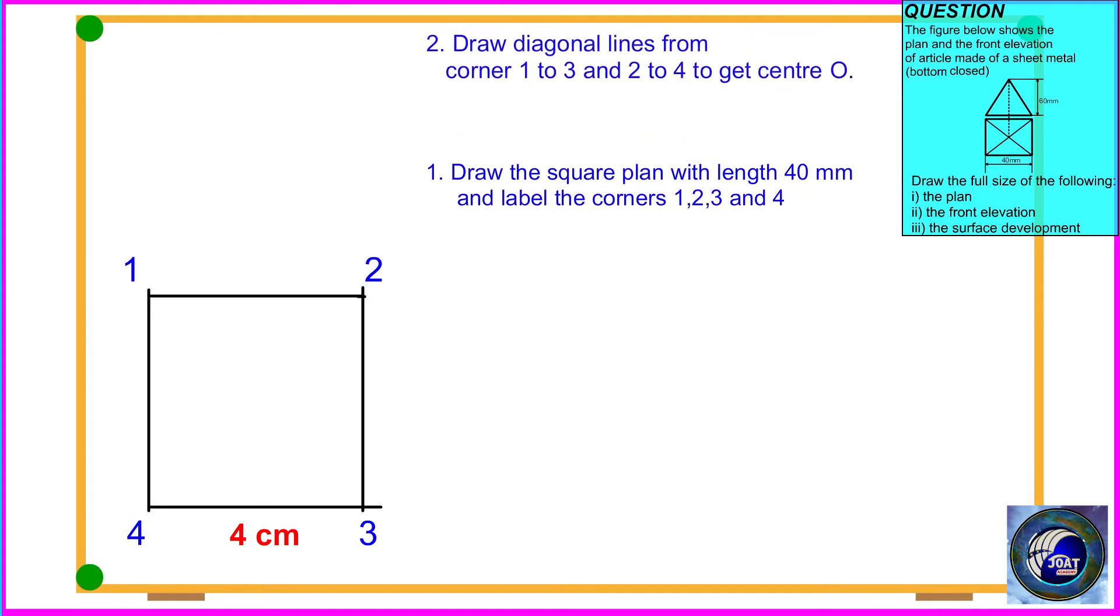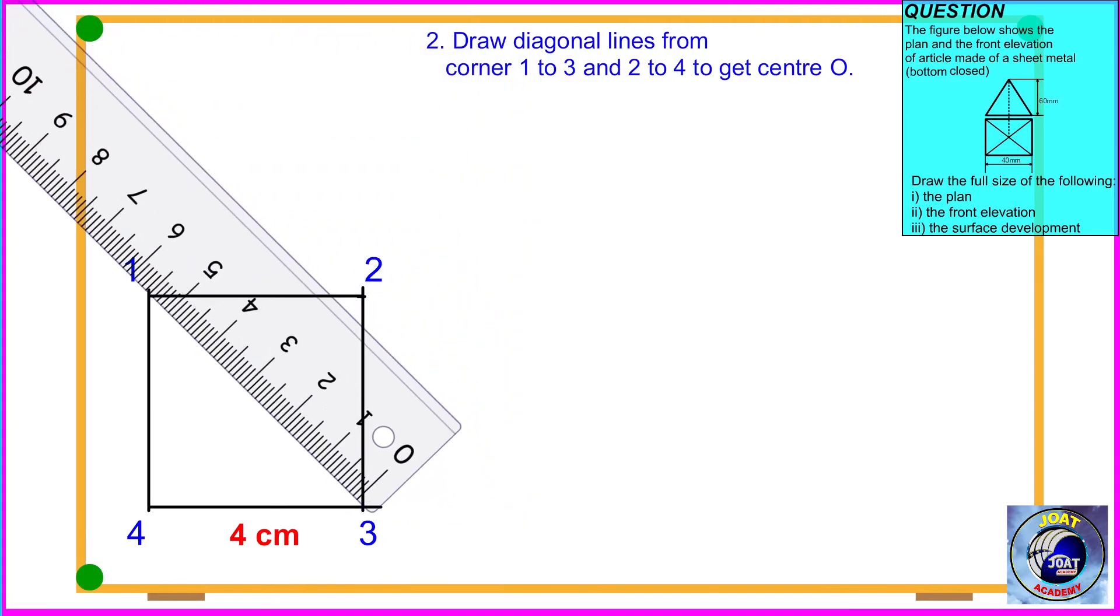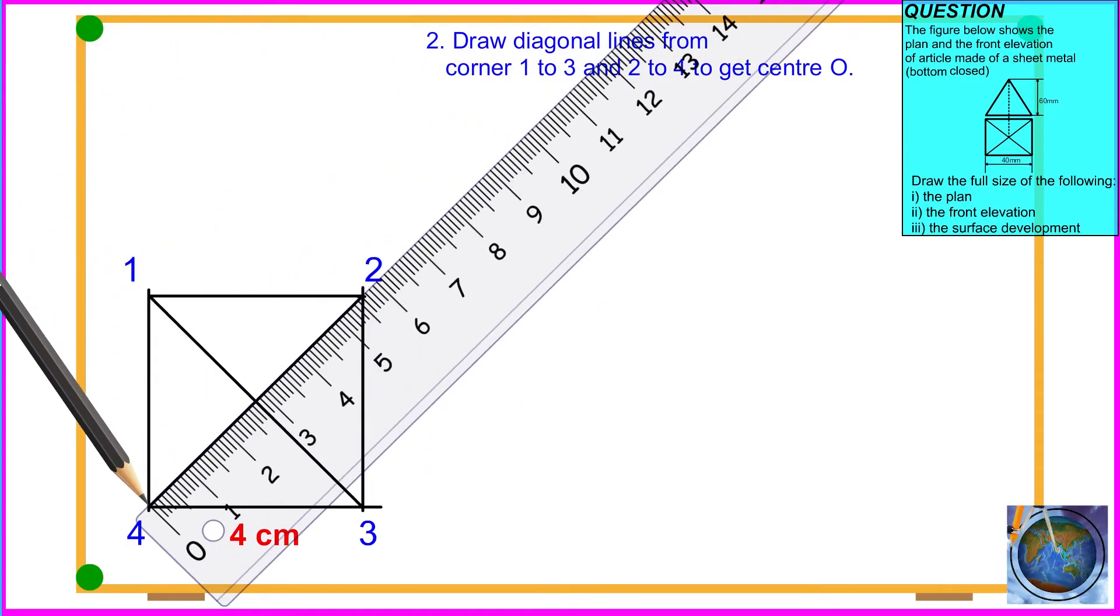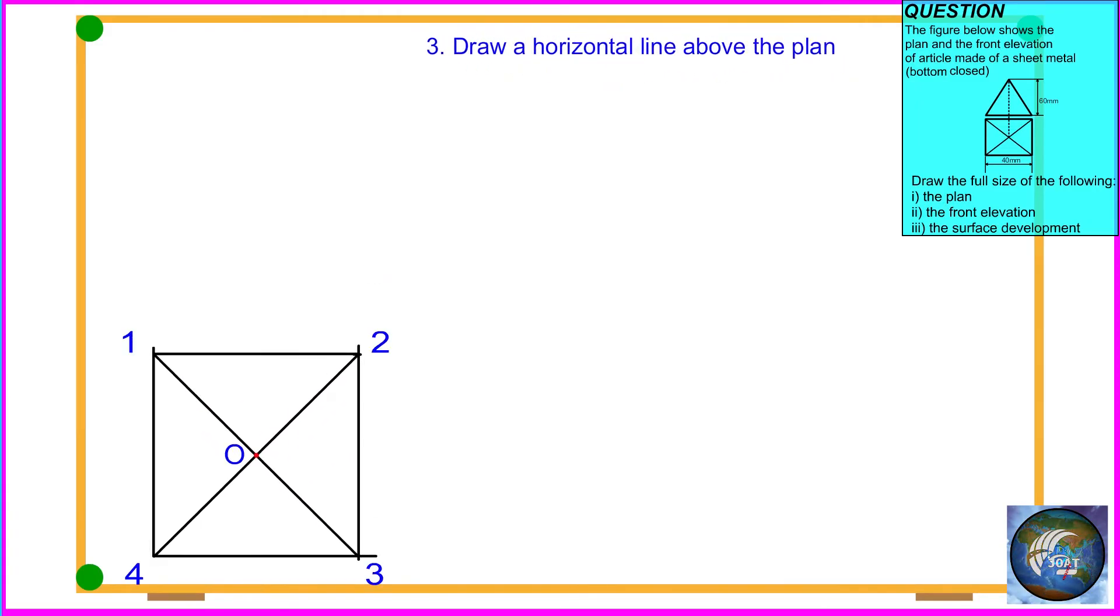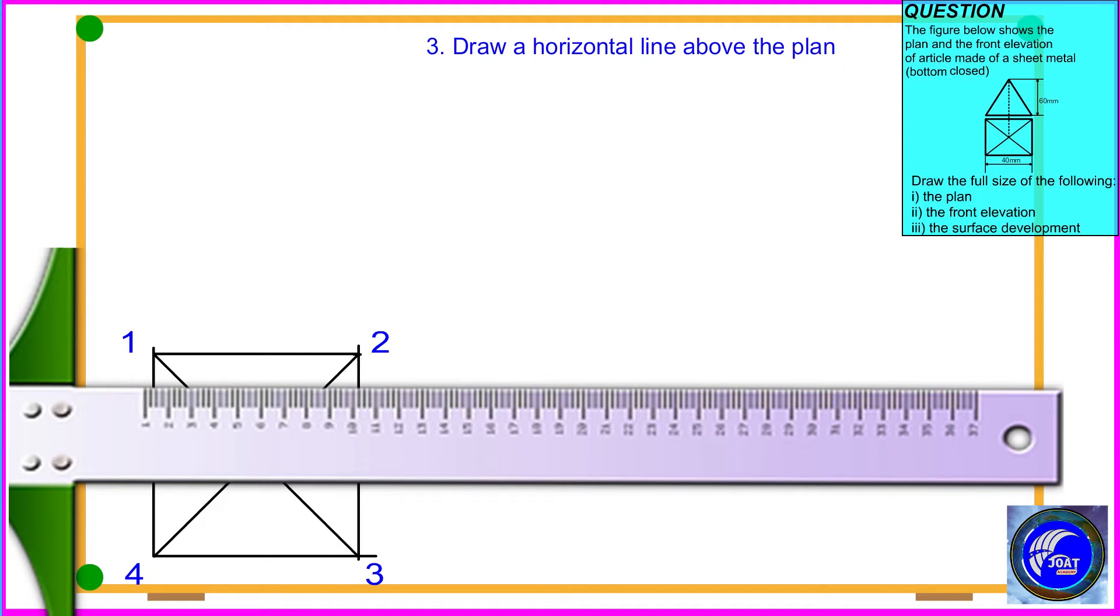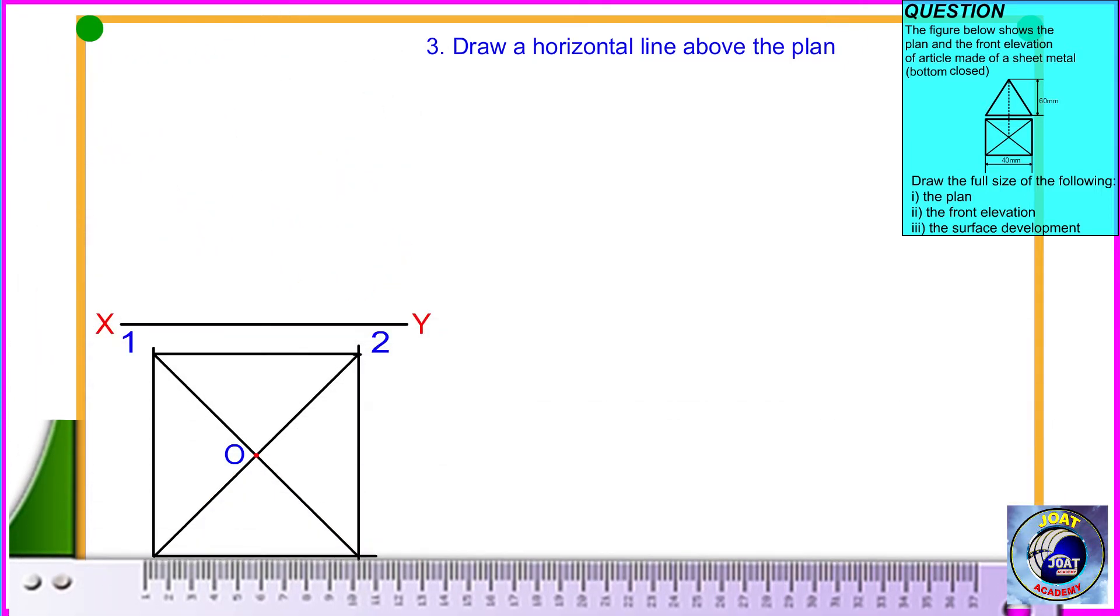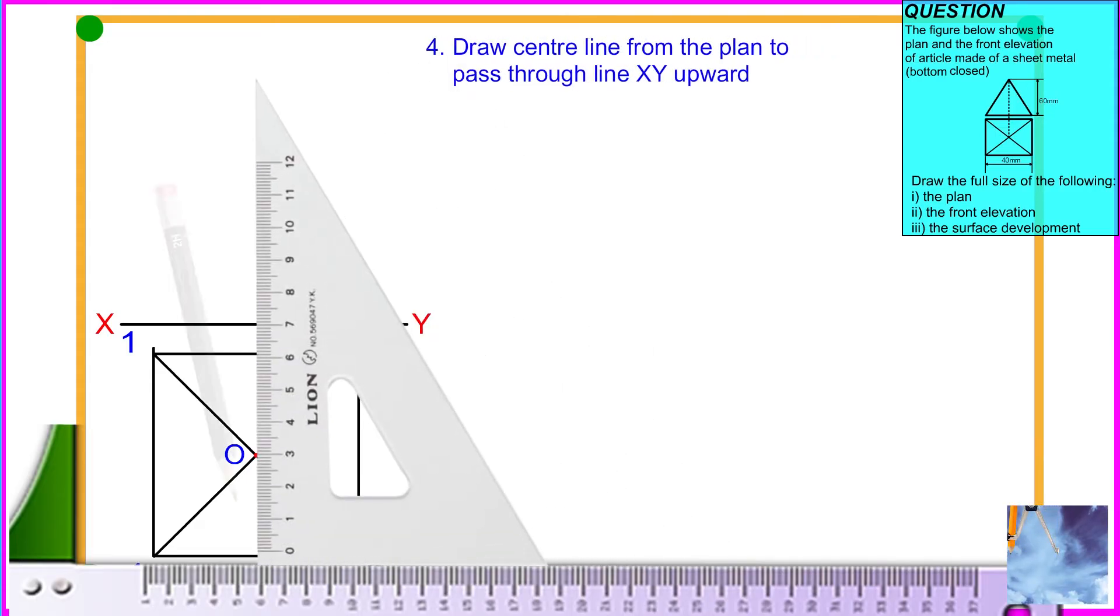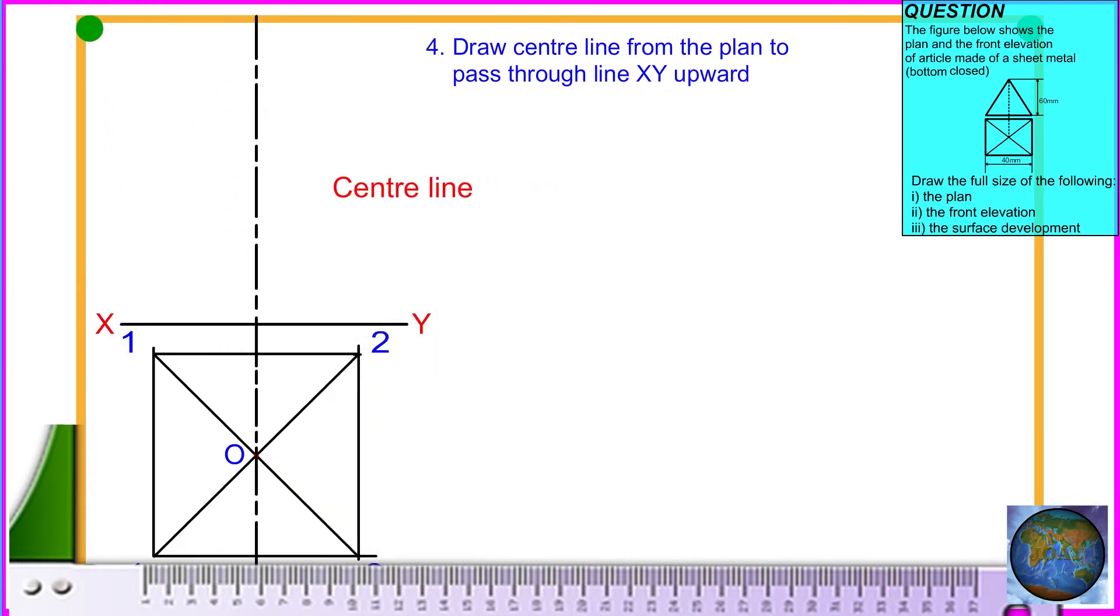Procedure 2: Draw diagonal lines from corner 1 to 3 and from corner 2 to 4 to get the center O. Procedure 3: Draw a horizontal line above the plan. Procedure 4: Draw center line from the plan to pass through line XY upward.